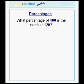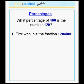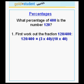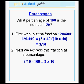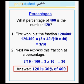Now, let's work out what percentage of 400 is the number 120. First, we write this as a fraction: 120 divided by 400. 120 over 400 is equal to 3 times 40 divided by 10 times 40. You can cancel out the common factor of 40, leaving you with the fraction 3 over 10. Now, we express the fraction 3 over 10 as a percentage: 3 tenths times 100. This is equal to 3 times 10, or 30. Therefore, 120 is 30% of 400.